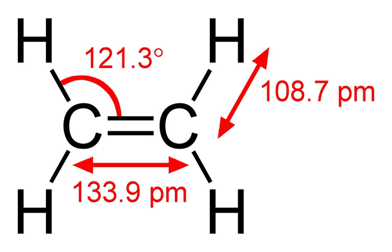However, by that time, the name ethylene was deeply entrenched, and it remains in wide use today, especially in the chemical industry. Following experimentation by Luckhardt, Crocker, and Carter at the University of Chicago, ethylene was used as an anesthetic. It remained in use through the 1940s, even while chloroform was being phased out. Its pungent odor and explosive nature limit its use today.